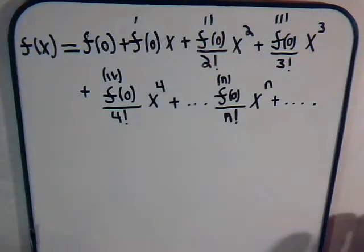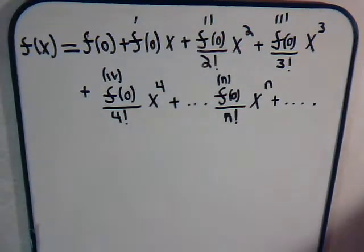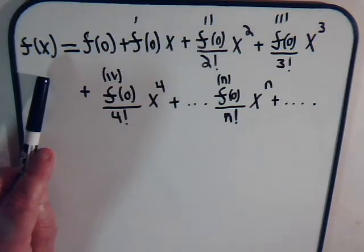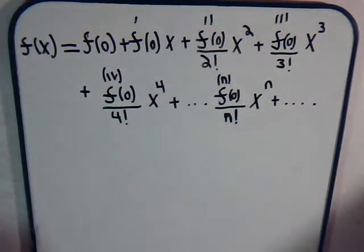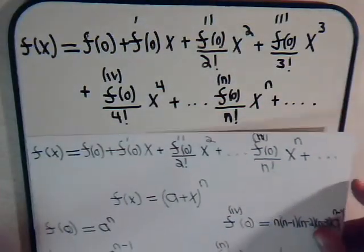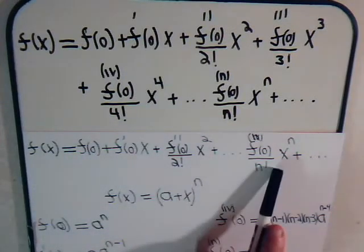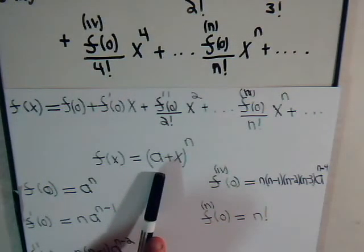This video is part 3 in our Taylor series and binomial expansion series. In the last video we had considered this expression that we had derived a couple of videos ago — that if a function can be expressed in terms of a power series it has to take on this form. What we did in the last video was ask: if this is the general expression of a power series for a function, what happens if the function is equal to (a + x) to the n?